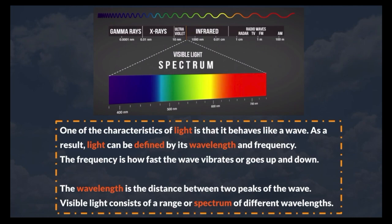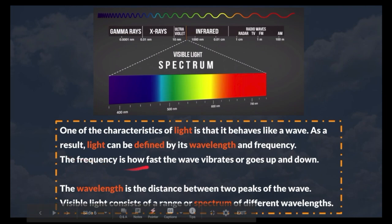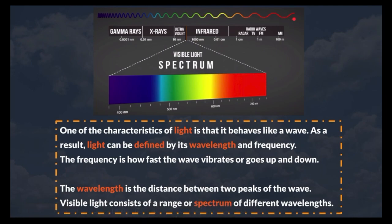One of the characteristics of light is that it behaves like a wave. As a result, light can be defined by its wavelength and frequency. The frequency is how fast the wave vibrates or goes up and down, as you can see over here.